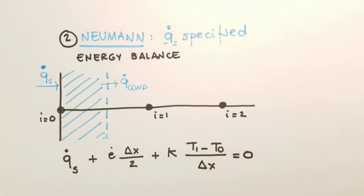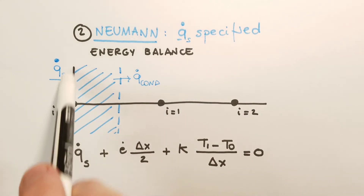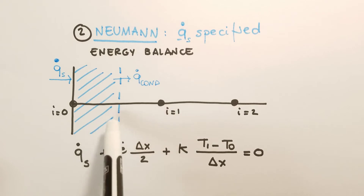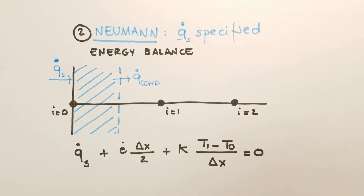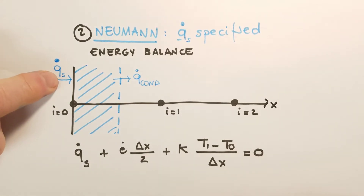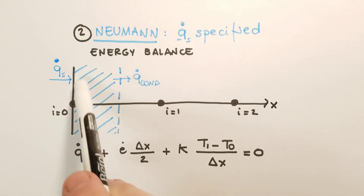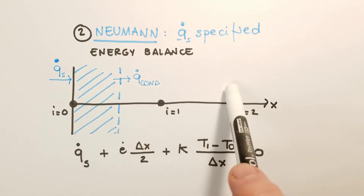Instead we can have a Neumann boundary condition. In the case of a Neumann boundary condition, it is the heat flux that is specified. To do that we have to rely on energy balance. We take a control volume and the control volume here has a thickness of delta x divided by two, where delta x is the distance between two grid points on the grid. We have a specified heat flux q_s at the boundary and we know there is some heat generation e inside the domain. On the right part of the control volume there is heat conduction, because heat is conducted away through the domain.